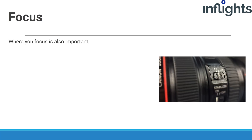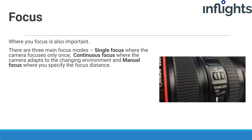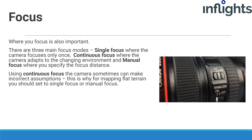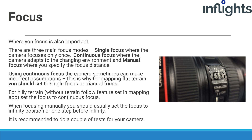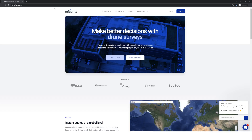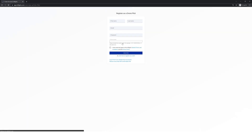The place where you focus your camera is also important. There are three main focus modes: single focus where the camera focuses only once, continuous focus where the camera adapts to the changing environment, and manual focus where you specify the focus distance. Using continuous focus, the camera can sometimes make incorrect assumptions. For flat terrain mapping, always set it to single focus or manual focus, except when mapping hilly terrain without a terrain mapping feature or city mapping — in those cases, use continuous focus. When focusing manually, usually set focus to infinity or one step before infinity. It is recommended to do a couple of tests for your camera. Please watch this video a few times, and to join our global pilot network, register at inflights.com/pilot.